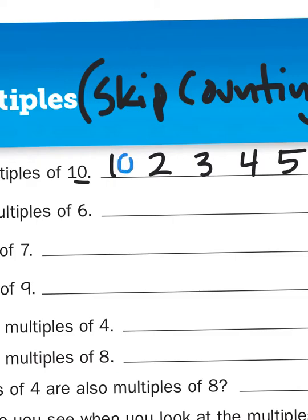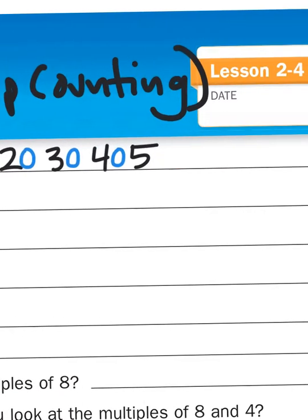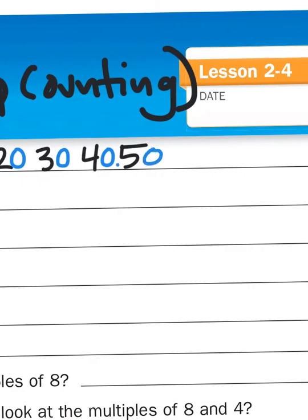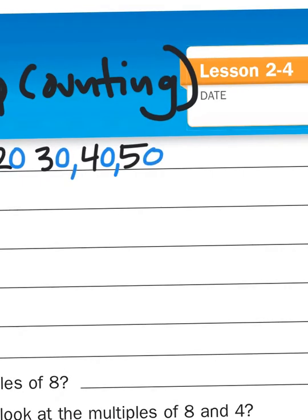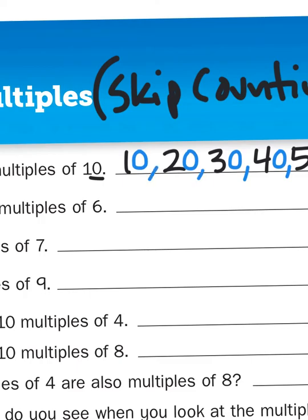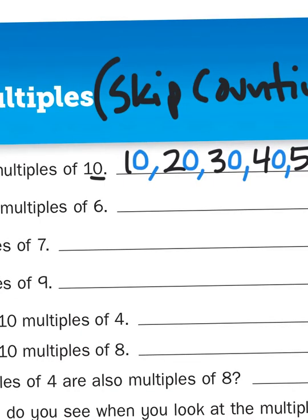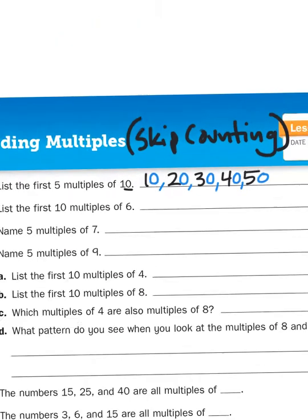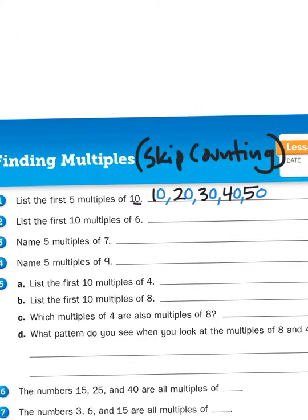So, if I'm skip counting by 10s, it's actually 10, 20, 30, 40, 50. Let's put some commas in there to separate those numbers. So basically, friends, when I am listing multiples, I'm just skip counting.